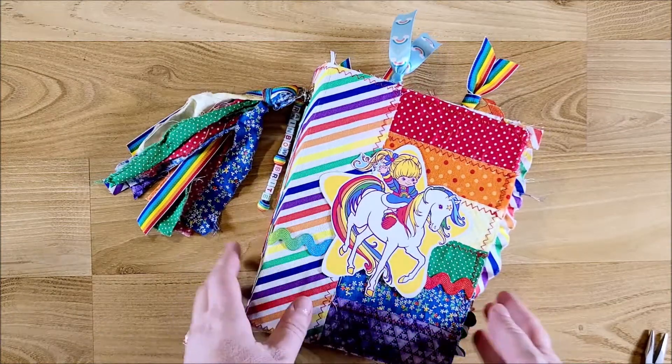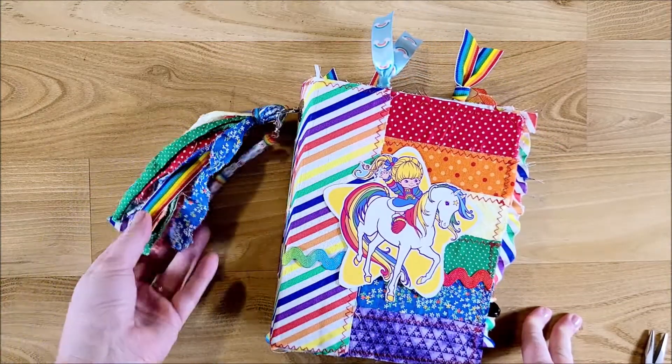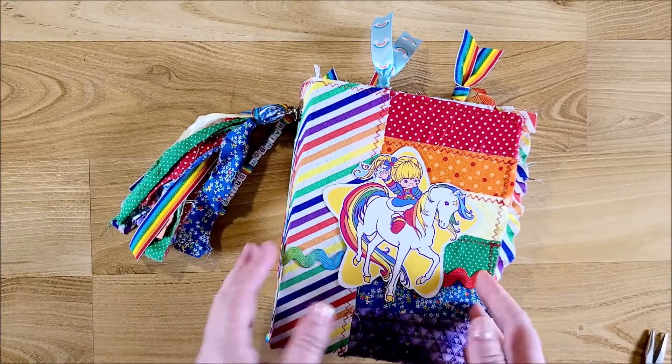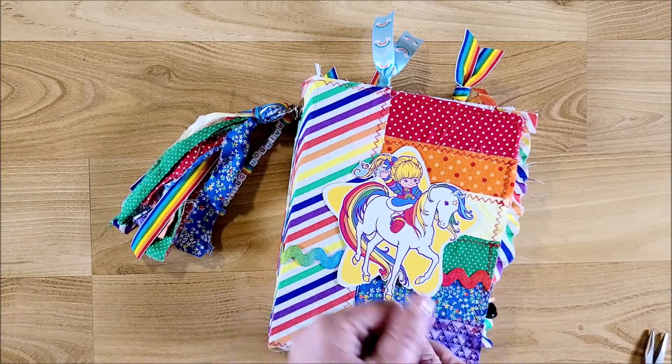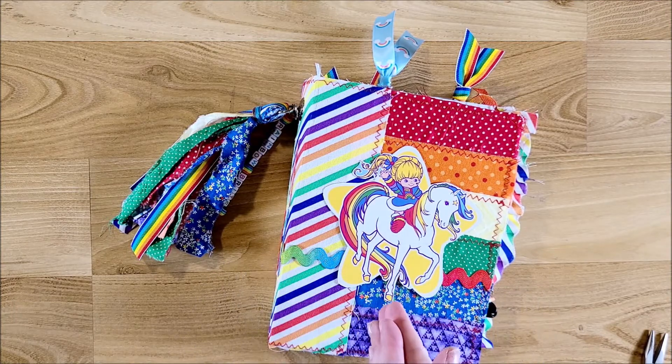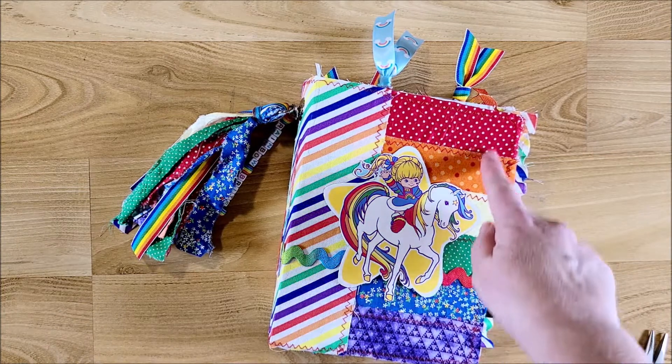I have everything sewn in the cover on this one. This one's almost finished. I just need to put the finishing touches and figure out what I'm going to use to tie it. I haven't decided if I wanted to use the Rainbow Bright ribbon that I have or one of the fabrics.